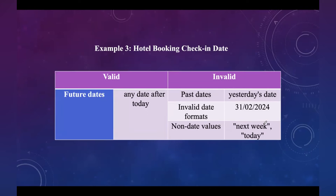For a hotel booking check-in date, valid inputs are future dates — tomorrow, the day after tomorrow, or any date after today. Invalid inputs include past dates such as yesterday's date, invalid date formats such as February 31st, and non-date values like 'next week' or 'today' entered as text rather than a proper date format.